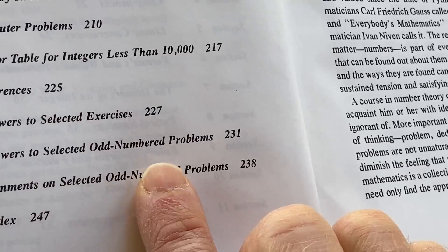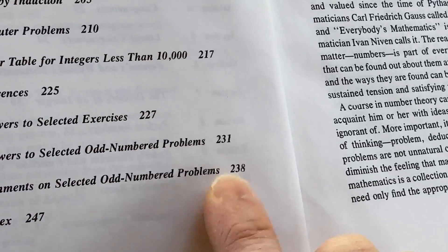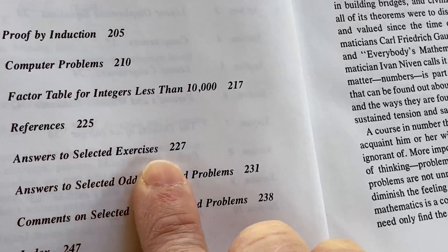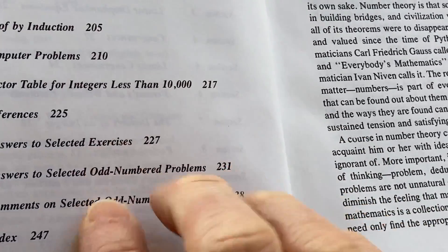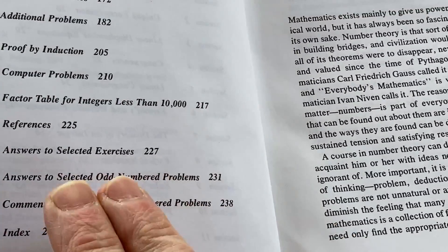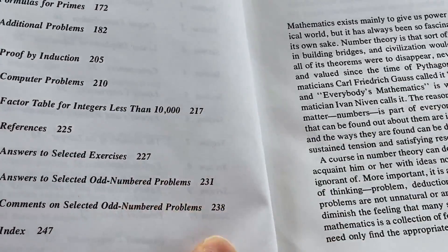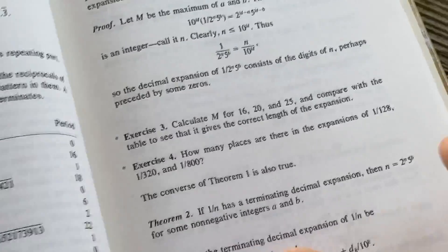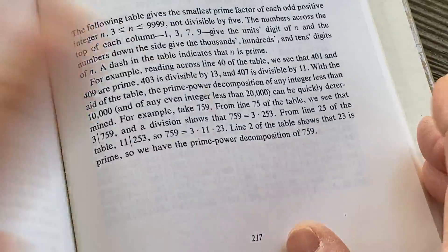You have some answers to selected odd numbered problems, comments on selected odd numbered problems, and answers to selected extras. So you have a lot of different varieties of answers. Let's go straight to the back of the book and see what that is because that's pretty rare to find in books at this level. Solid book by the way. Good quality pages. Old school.